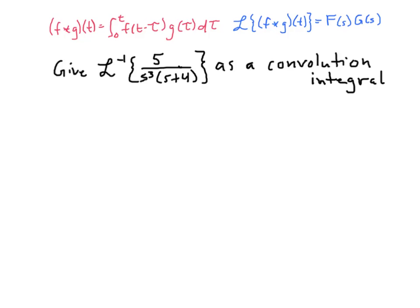Let's look at the example where we're finding the inverse transform of five over s-cubed times the quantity s plus four. Ordinarily we would do a partial fractions decomposition, but here we want to express such an inverse transform as a convolution. So we take five over s-cubed times s plus four and split it into two separate fractions: five times one over s-cubed times one over s plus four.